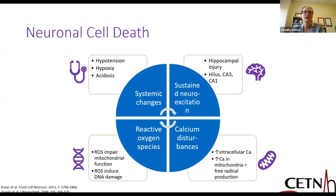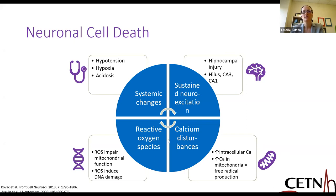In a patient like this, we're looking at permanent neuronal cell death and changes. Some of this happens because of sustained neuroexcitation despite best efforts to treat it. This leads to injury of the hippocampus, especially in CA3 and CA1 areas. You get calcium disturbances with increased intracellular calcium, which affects mitochondrial function. This leads to reactive oxygen species, which cause DNA damage and further mitochondrial dysfunction. Systemically, there's hypotension, hypoxia, and acidosis that can happen if interventions aren't initiated quickly.